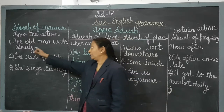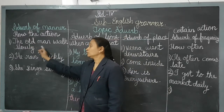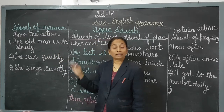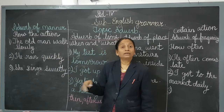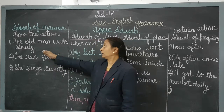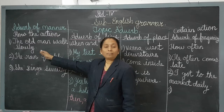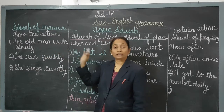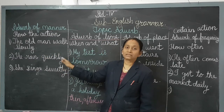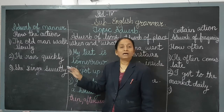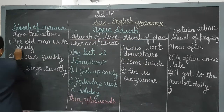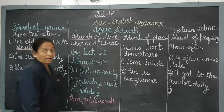Now see the example: 'The old man walked slowly.' The action of walking — how is it done? It is done slowly. That is called the manner. From this sentence you can understand the man is walking slowly. This type of sentence is called the adverb of manner, and 'slowly' is the adverb here.